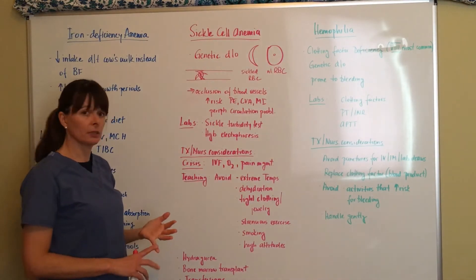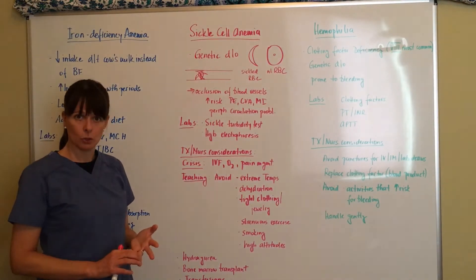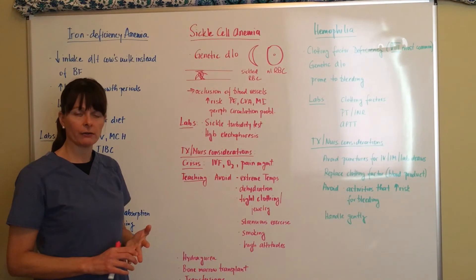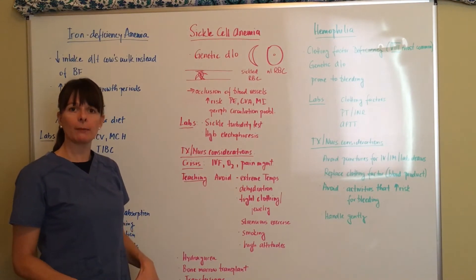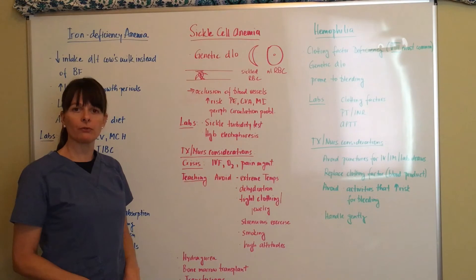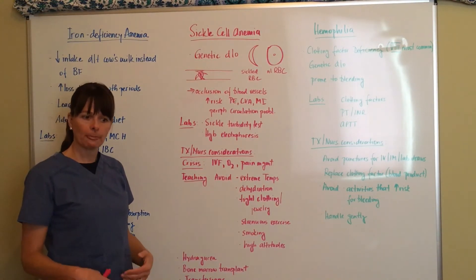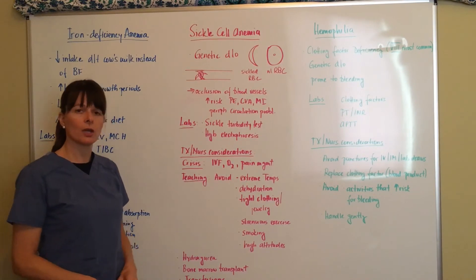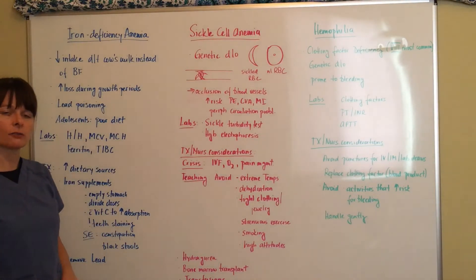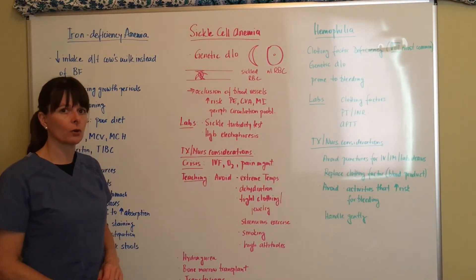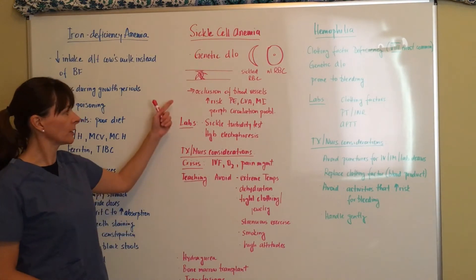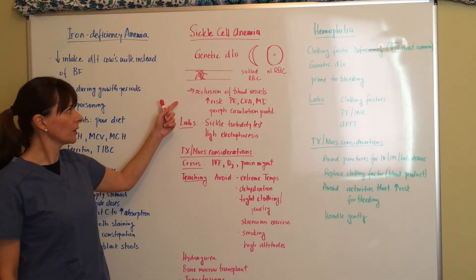That would be pulmonary embolus, stroke, myocardial infarction, and any problems with circulation anywhere. In the peripheries or lower extremities, they can have peripheral vascular issues and sores because of poor circulation there.